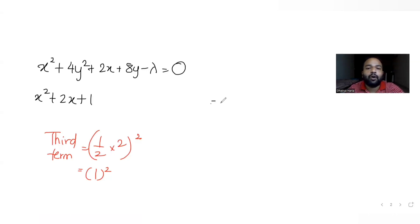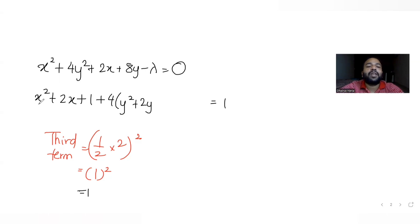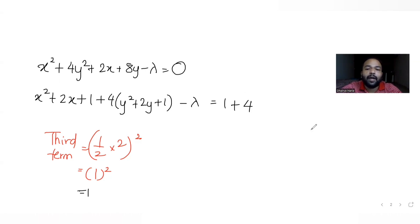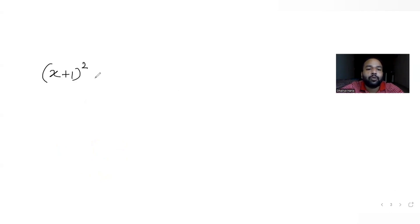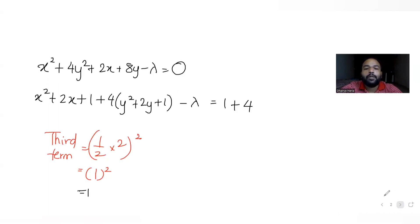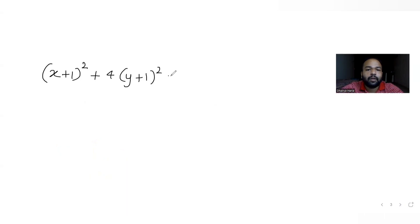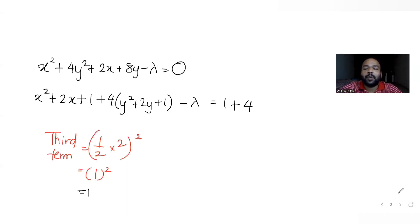On the right-hand side, I also add 1. For the y terms, I make 4 common to get y² + 2y. Adding 1 inside the bracket means I'm actually adding 4 overall, so I add 4 on the right-hand side as well. The equation becomes: (x + 1)² + 4(y + 1)² = λ + 5.